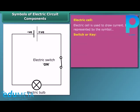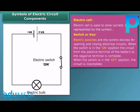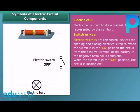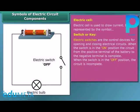A switch or key makes or breaks the connection in a circuit. When the switch is in the on position, the circuit is closed and the current flows throughout the circuit. When the switch is in the off position, the circuit is open and no current flows through the circuit.